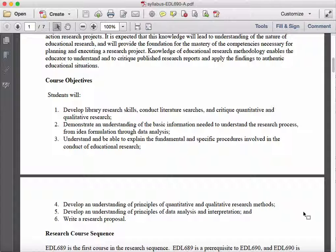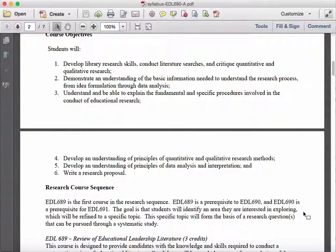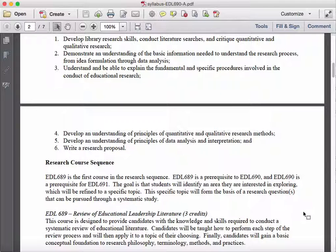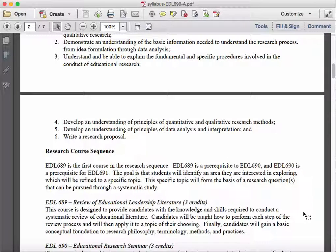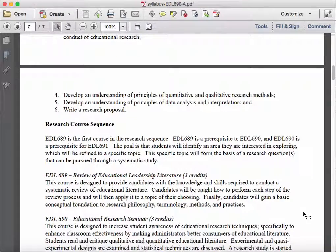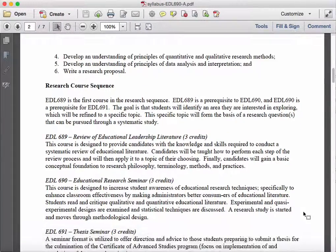I will point out objective number six, the research proposal within the thesis and dissertation context. A research proposal is considered essentially the first three chapters of your thesis or dissertation, so chapters one, two, and three form the research proposal. By the end of this class, you will actually have a research proposal completed, so you'll have the first three chapters of your thesis written. This is the same language that you would have seen in 689, looking at the three-course sequence and how the courses fit together.